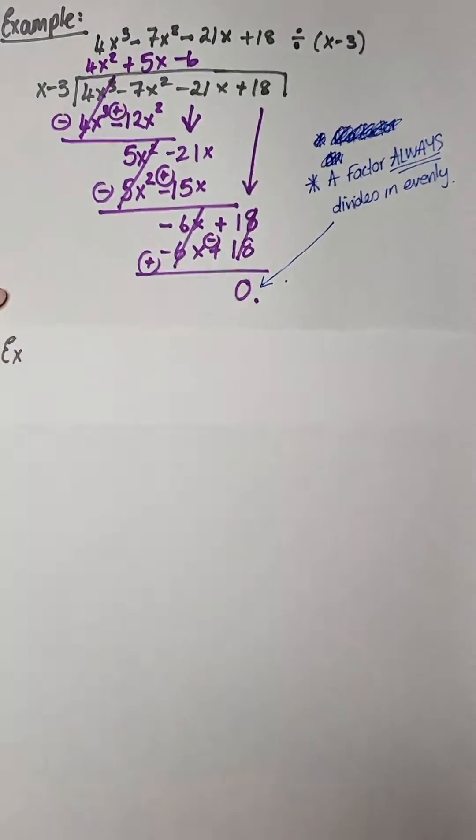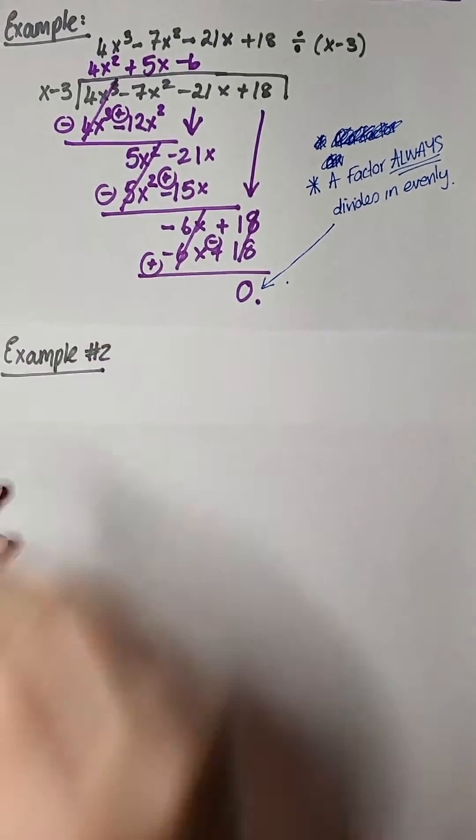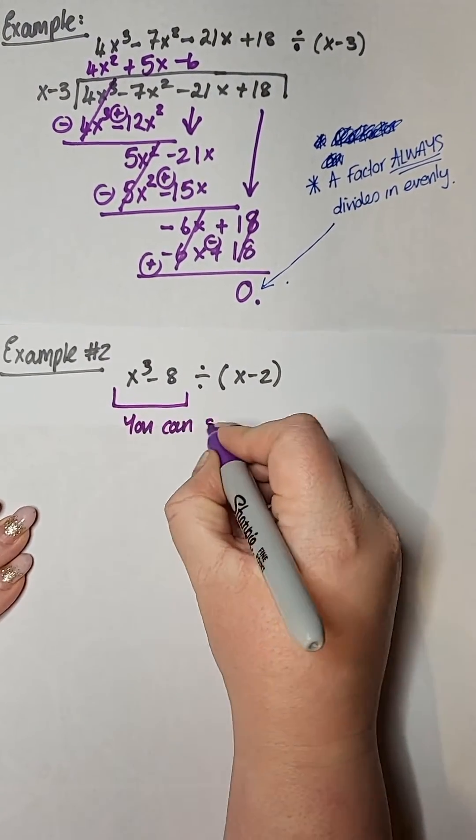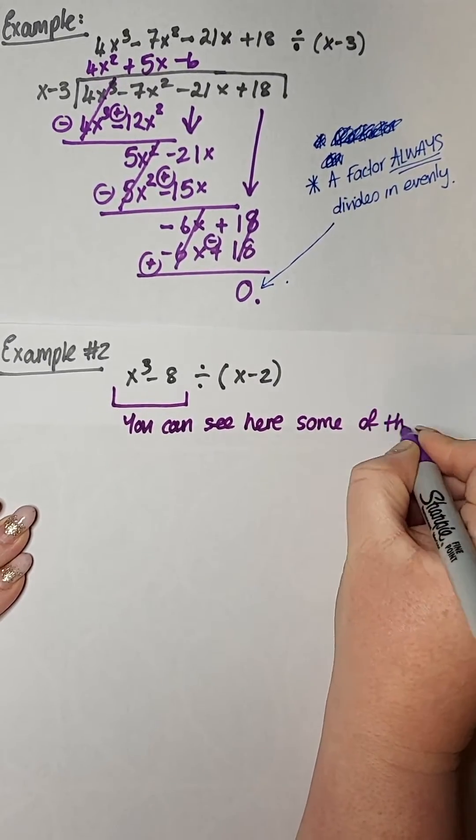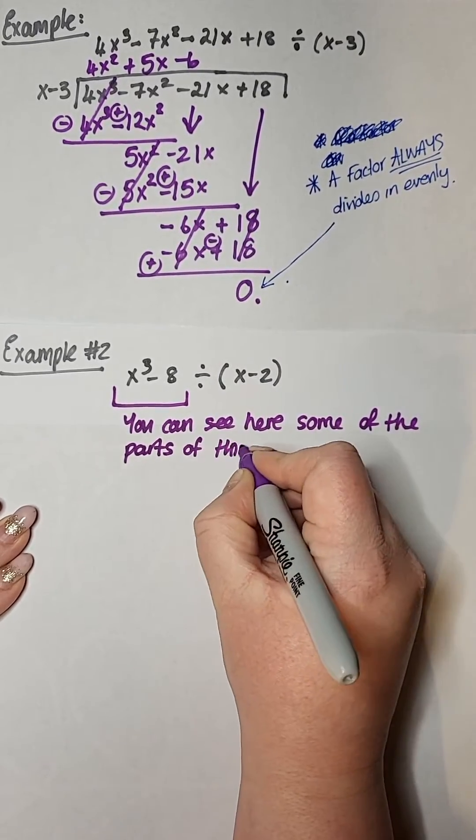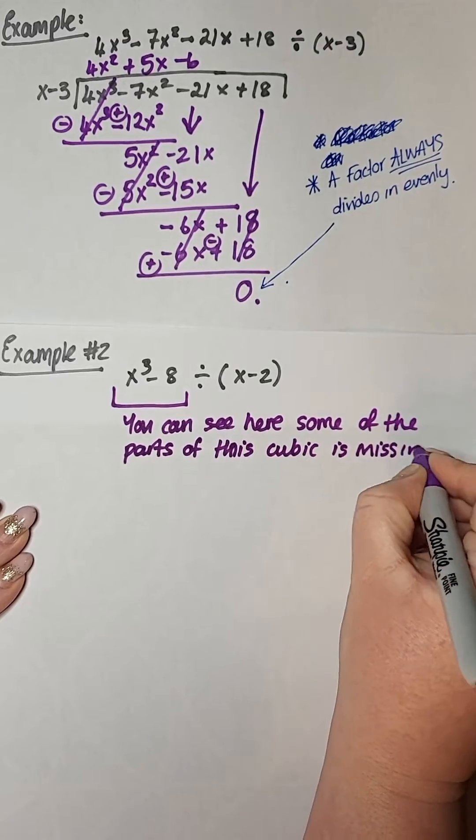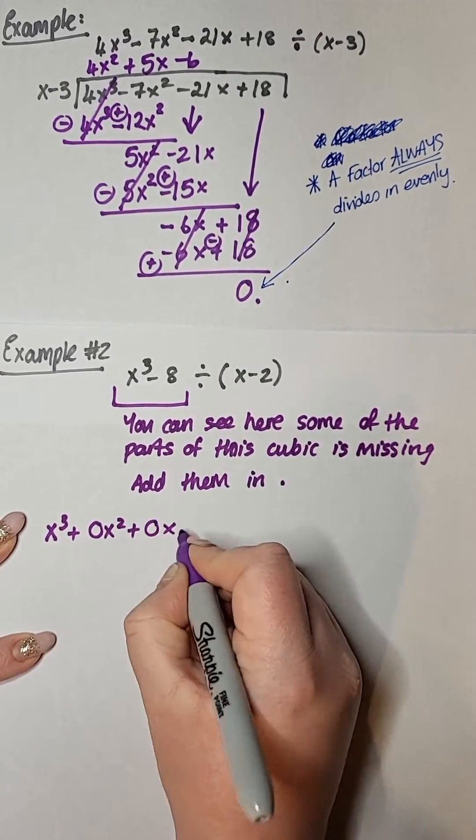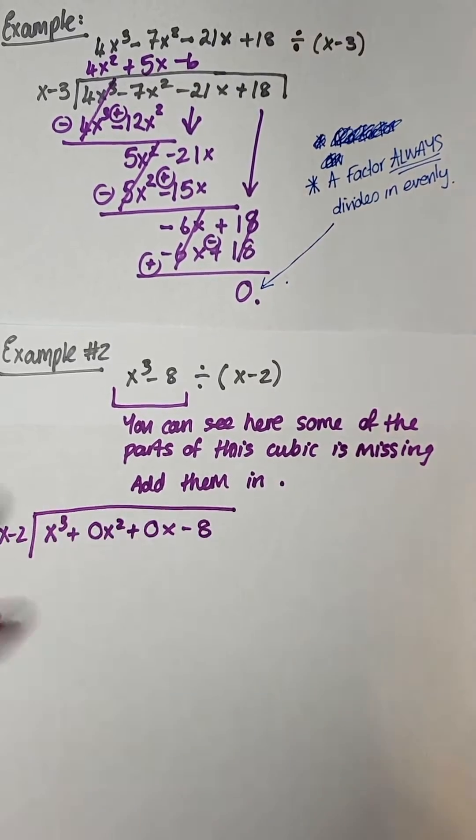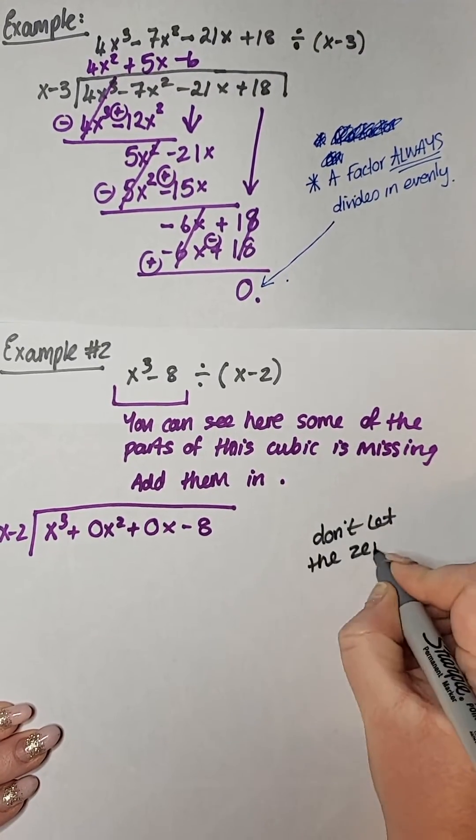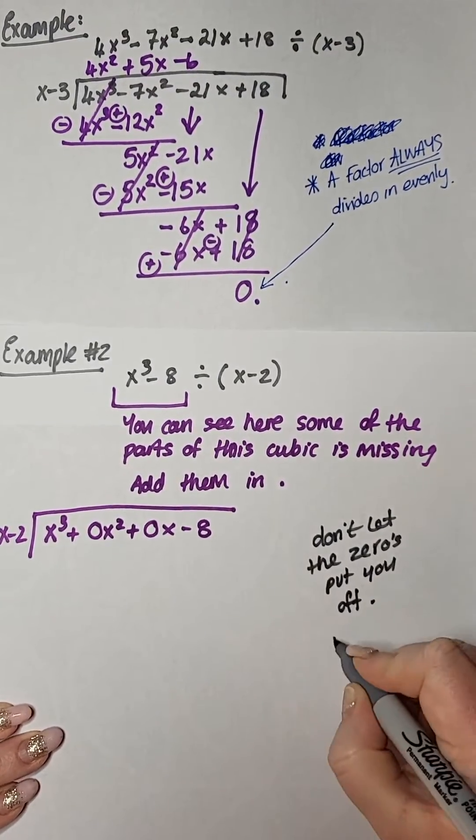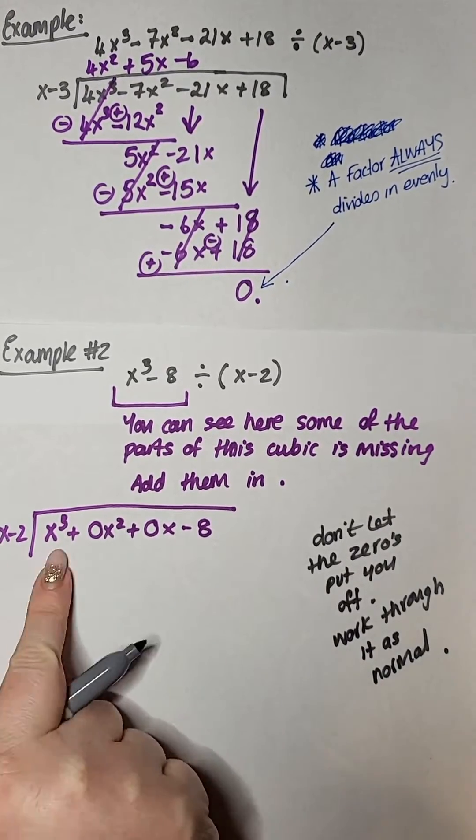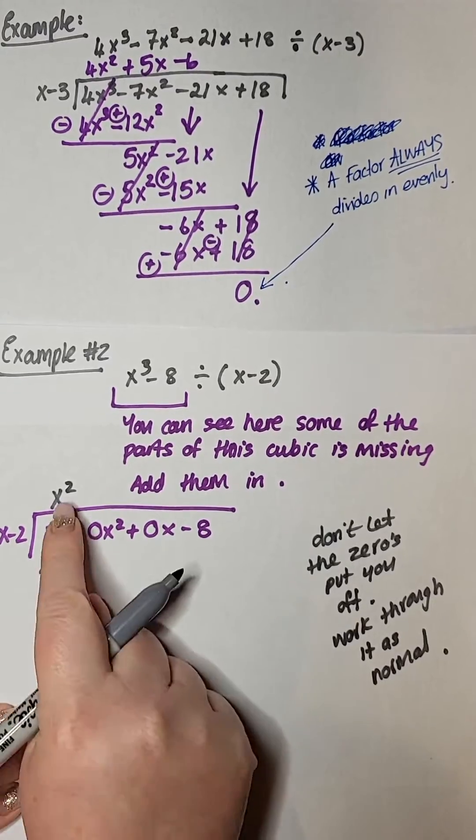The tricky thing about algebraic long division is it's actually quite difficult to learn it from just looking at a worked out solution. You really need to be doing this calculation with me here and also doing it as many times you need to to get the process right. Practice does make perfect and I know that's a really cliche thing to say, but it is 100% true in this case. So promise me that you will pause and rewind this as much as you need to so you can absolutely ace this.